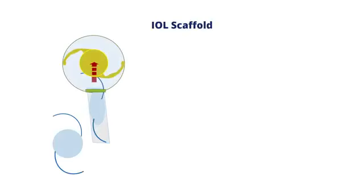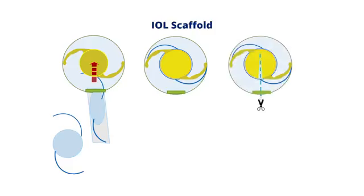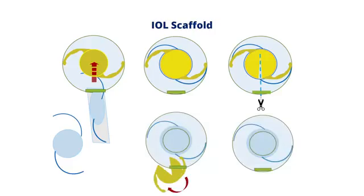In another technique called the IOL scaffold technique, which has been recently described, we use the lens we are going to implant to provide a scaffold and protection for the posterior capsule. After freeing up the lens to be explanted and bringing it into the anterior chamber filled with dispersive viscoelastic, we inject adequate viscoelastic into the bag and then inject the new intraocular lens behind the first lens you want to explant. This new lens in position acts as a scaffold whilst you cut across the lens you wish to explant, and this can be done safely because your scissors will never hit the posterior capsule, which is now protected by the new intraocular lens. Sometimes you can place this lens in the sulcus and then manipulate it later into the capsular bag — it does not have to be in its final position when first injected into the eye.